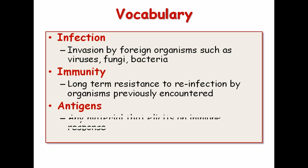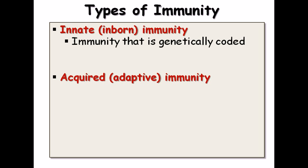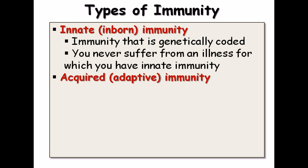Antigens are any material that elicits an immune response. Now, immunity can be of two types: innate immunity and acquired immunity. Innate immunity is inborn immunity — it is genetically coded from our parents. Acquired immunity is adaptive immunity, developed after birth.